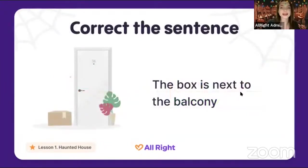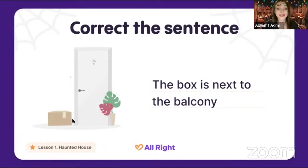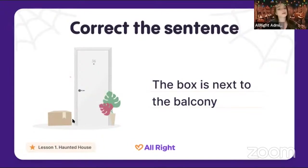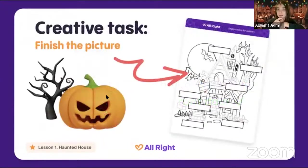Now let's look at the next sentence: 'The box is next to the balcony.' But it doesn't look like a balcony — the box is next to the... knock knock knock — yes, it's the door! But what door is it? It has a name: front door. Yes, very good — the box is next to the front door, and it's white.